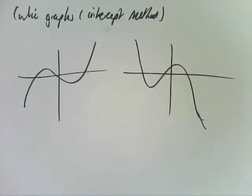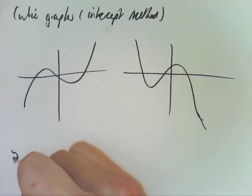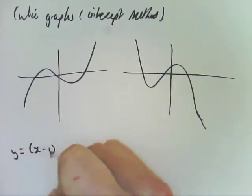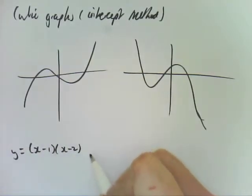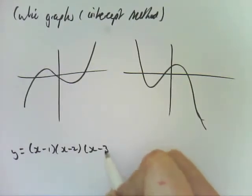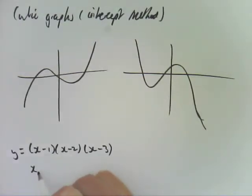Now we used intercept method when we were talking about quadratics. The same process applies here. So if you have an equation, y equals (x-1)(x-2)(x-3), we used the null factor law, we know they're the x-intercepts. So x-intercepts are 1, 2 and 3.